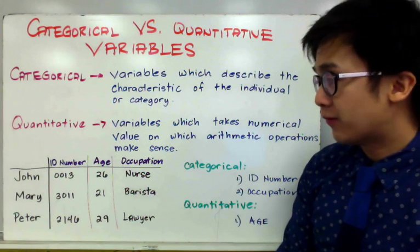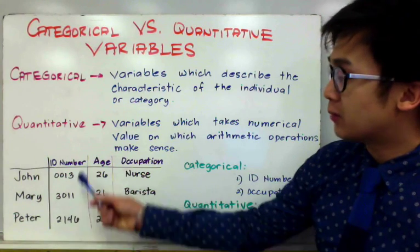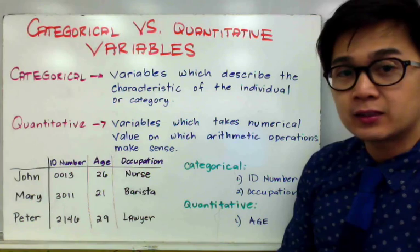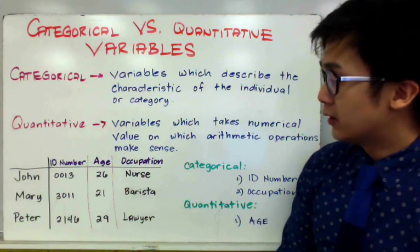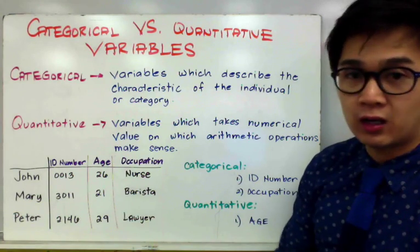For example, if we find the average of the ID number, even though we can pretty much add these three items together and divide it by three, it still doesn't make sense to tell us that there is an average ID number of, let's say, 2133 after taking this average.